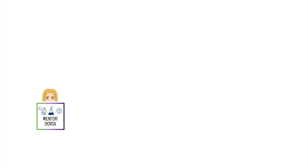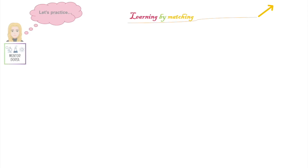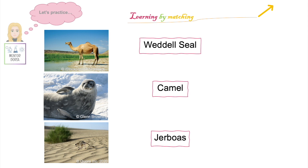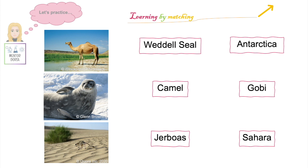Now let's practice what we have just learnt with a learning by matching activity. Here we have pictures of three different animals we find in different deserts across the world. What I would like you to do is match the picture with the name of the animal and the name of the desert where it comes from. The first picture shows you a camel, which can be found in the Sahara Desert. The next picture shows you a Weddell seal, which can be found in the deserts of Antarctica. Finally, the last picture shows you a jerboa, which calls the Gobi Desert home.